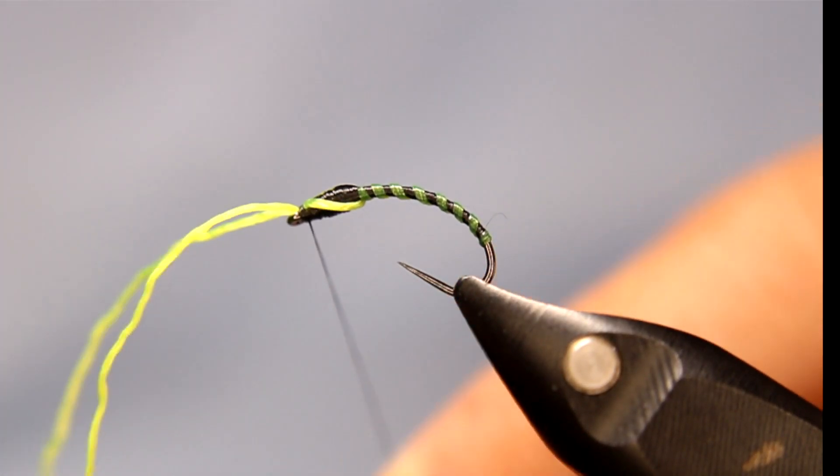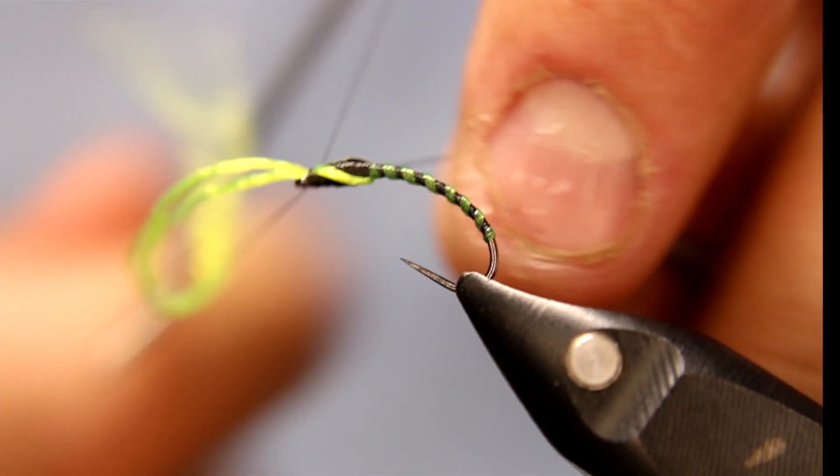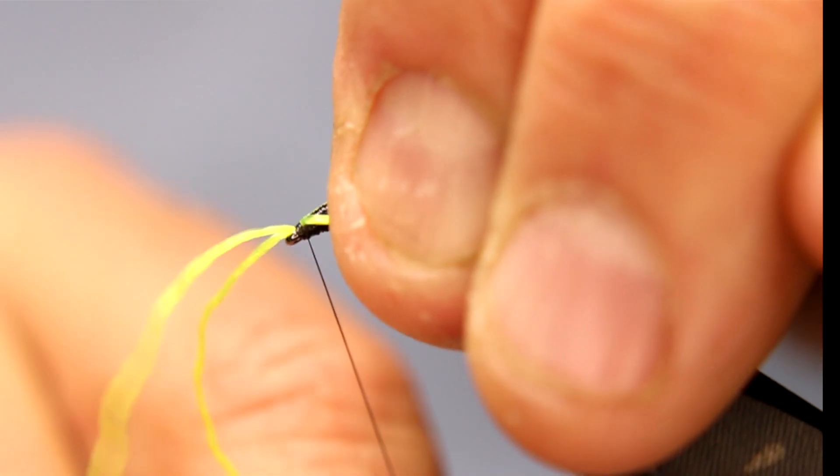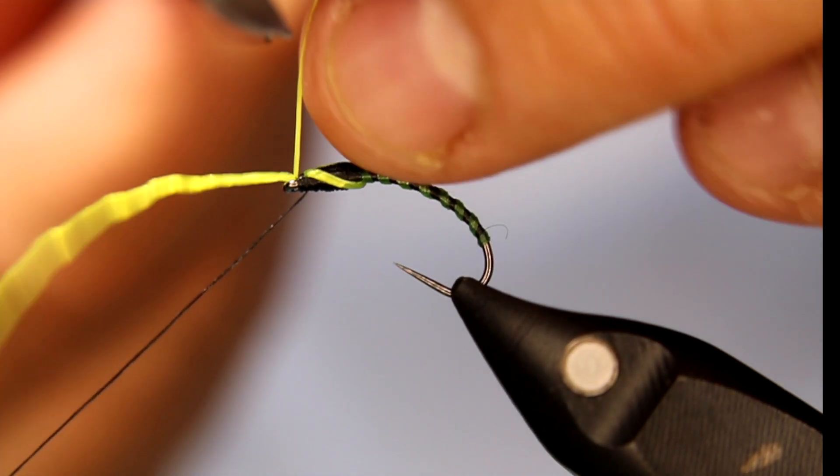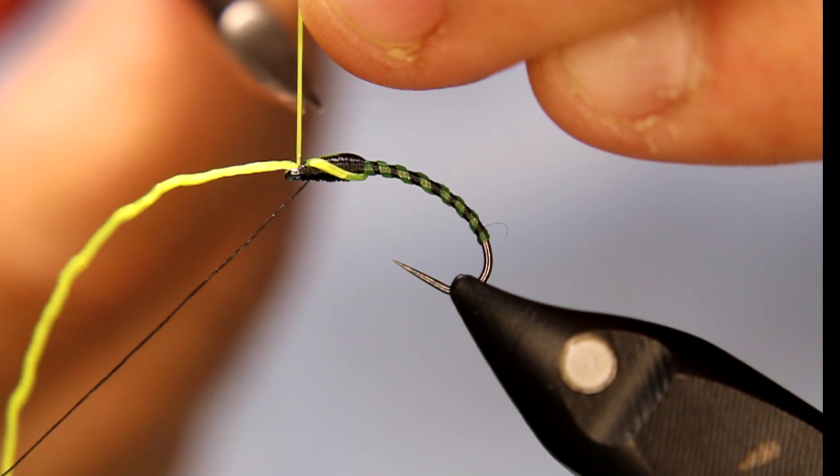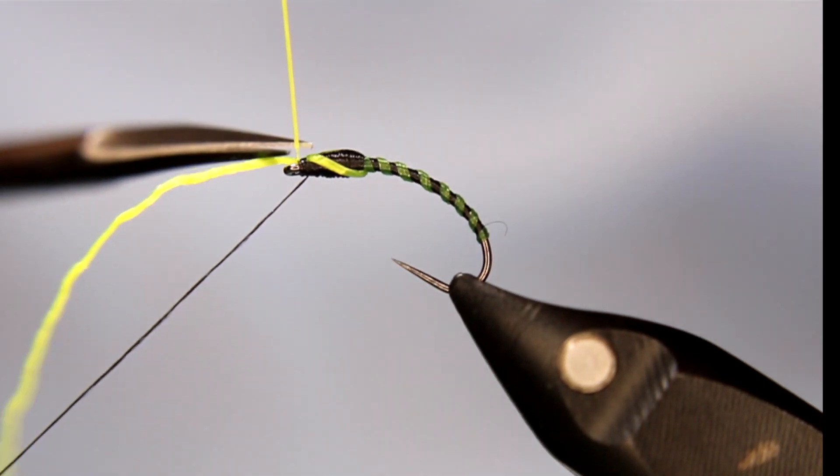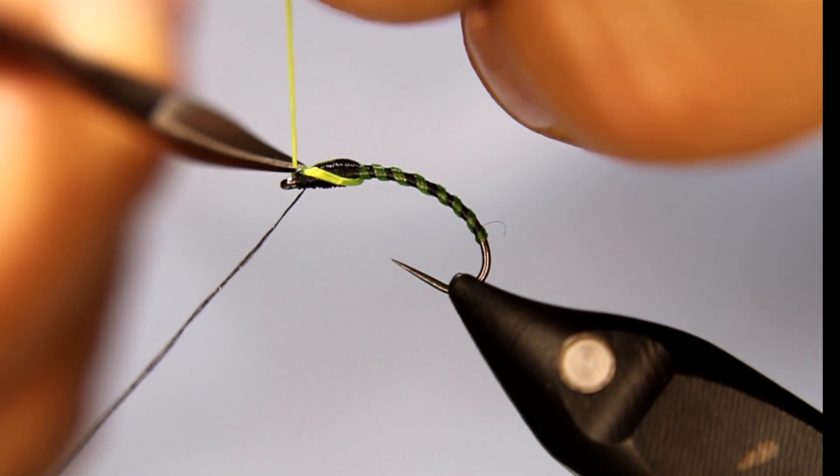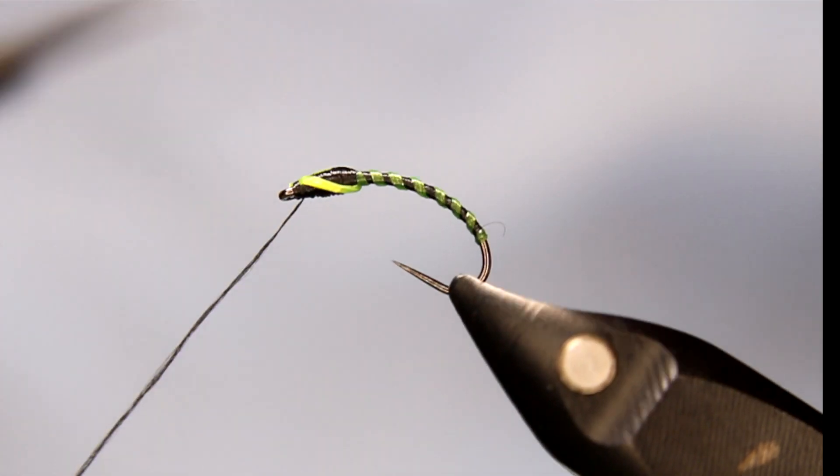I'm gonna try to do a whip finish with these right where they are. I'm trying to not get any of those in there. So that's just a two turn whip finish, more of a security right now. Then I'm not gonna pull too tight with these, I don't want them to retreat back in.